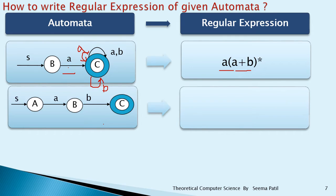The next diagram has three states: A, B, C. C is the final state and A is the initial state. S is the starting symbol, and small a and small b are the two inputs. The regular expression is simply AB, because whenever A and B are on the same level — connected in serial fashion — you write AB, which is a concatenation.